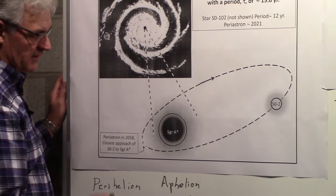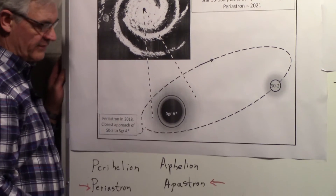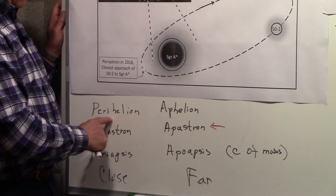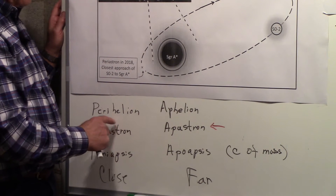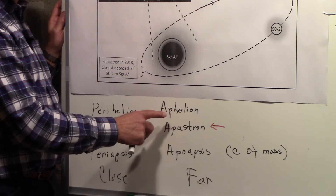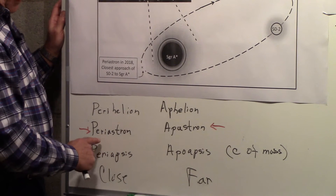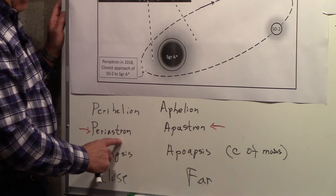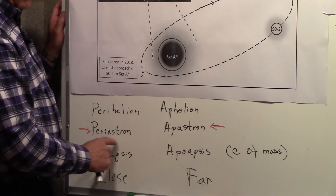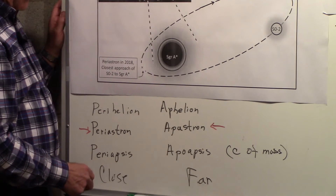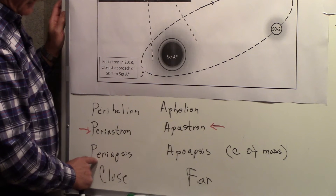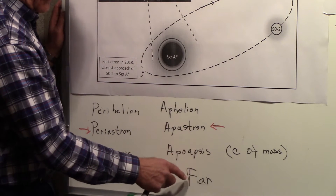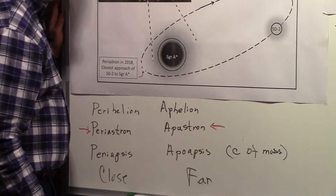Just to remind you, there are terms for these close and far points. Perihelion means when the Earth is closest to the Sun, and aphelion means when the Earth is furthest from the Sun. When talking about stars, the terms used are periastron for the close point and apastron for the far point. Another set of terms is periapsis for the close point and apoapsis for the far point, with reference to the center of mass.